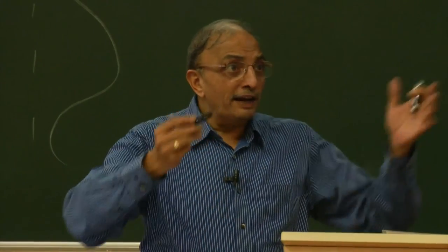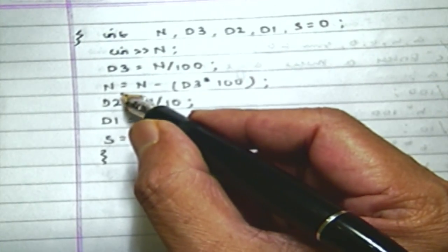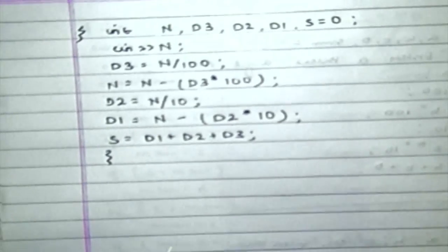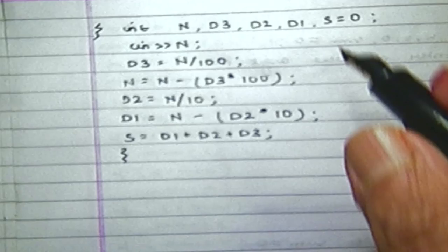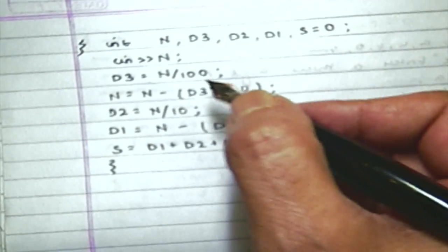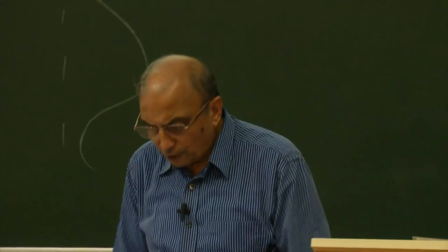Here is the last one, from Yogesh. He declares the numbers, inputs N, calculates D3 as N divided by 100, reduces N by saying N equals N minus D3 times 100, calculates D2 as N divided by 10, calculates D1 as N minus D2 times 10, and finds out the sum. This program will also work. One good point: since S is going to be output, he starts with S equal to 0. D1, D2, D3 are computed from N — N is an input value — but S is computed. In general, it is a good idea to initialize your variables.